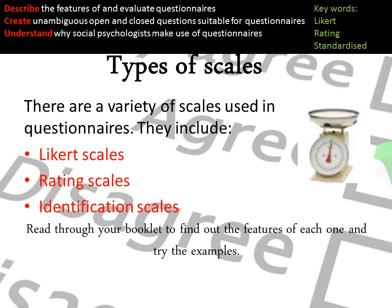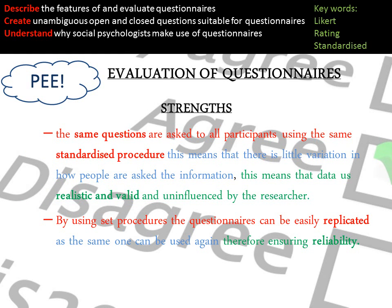Types of scales: a Likert scale might be where participants have to rate their answer — for example, on a scale of one to five, one being 'strongly agree' and five being 'strongly disagree.' They might use a rating scale to rate their opinion, or an identification scale.